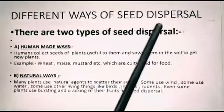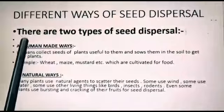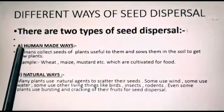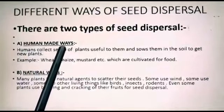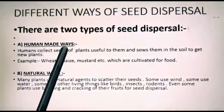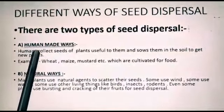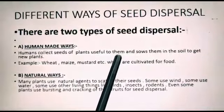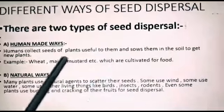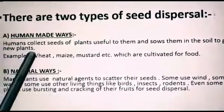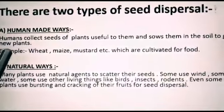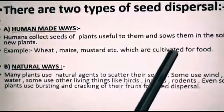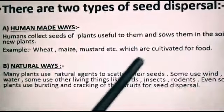Different ways of seed dispersion. There are two types of seed dispersion. The first one is human-made methods. In this process, humans collect seeds of plants useful to them and sow them in the soil to get new plants. For example, wheat, maize, mustard, etc., which are cultivated for food.